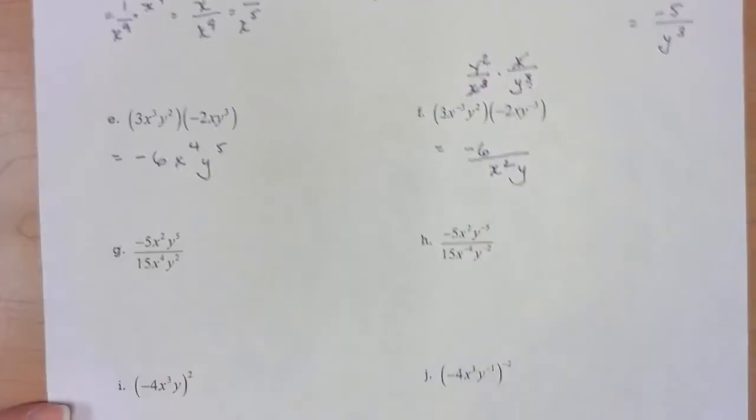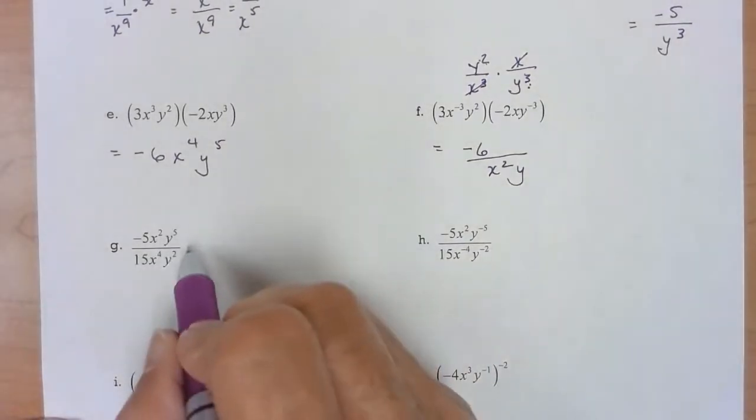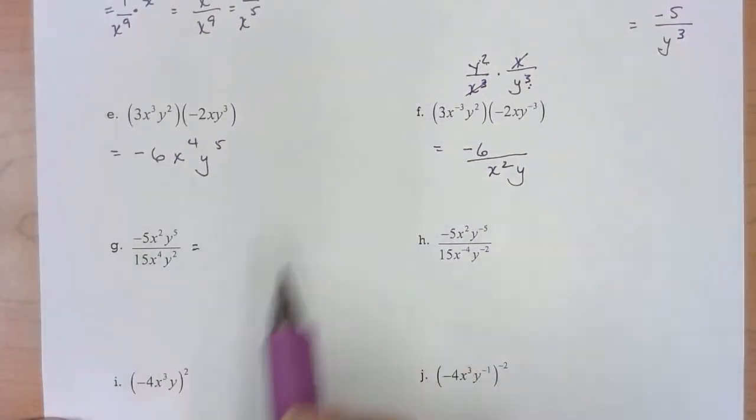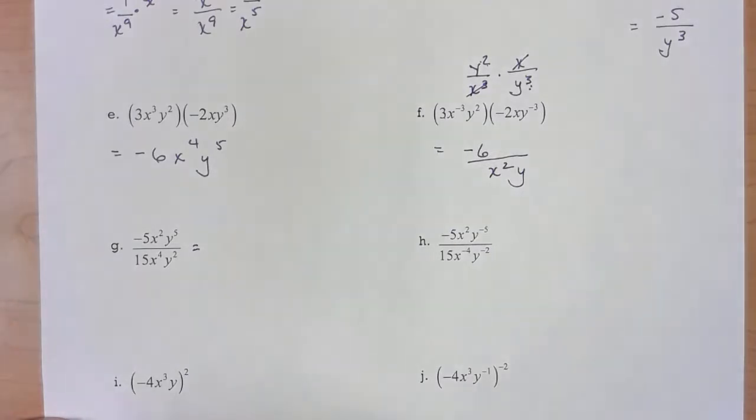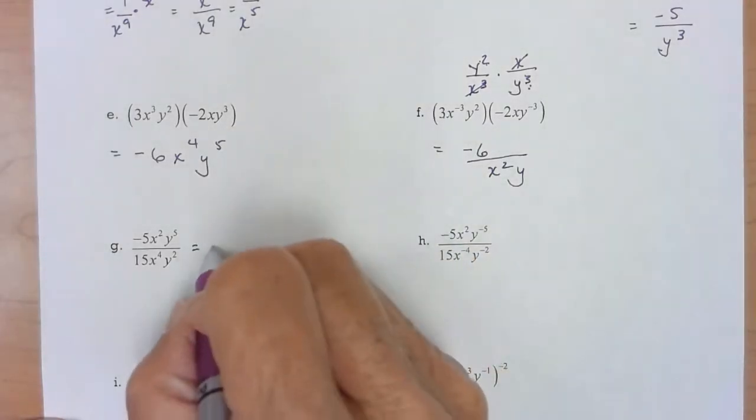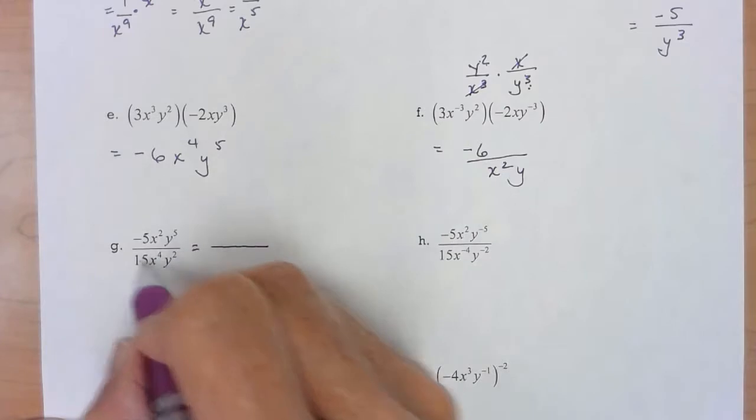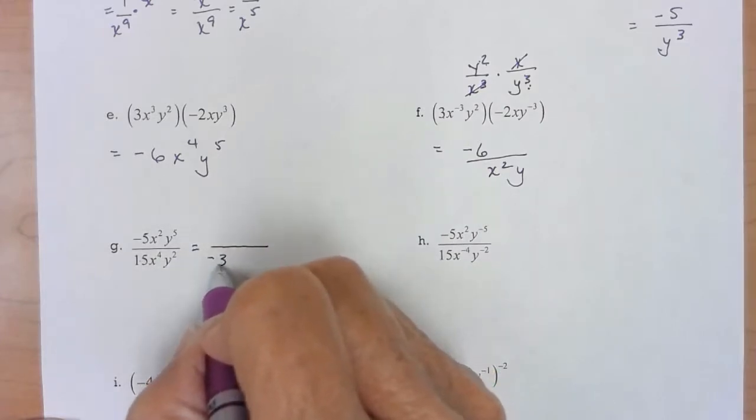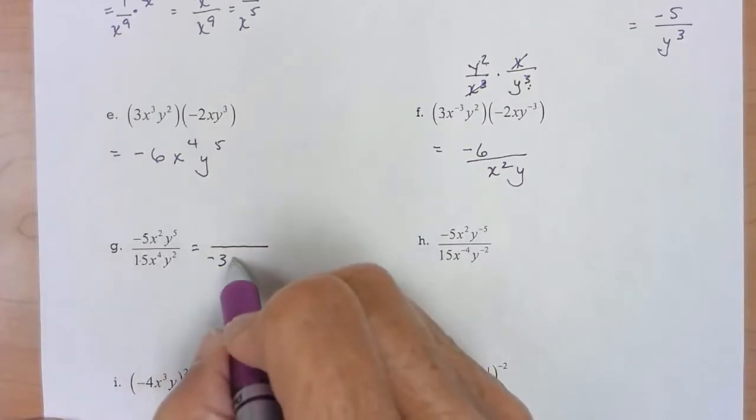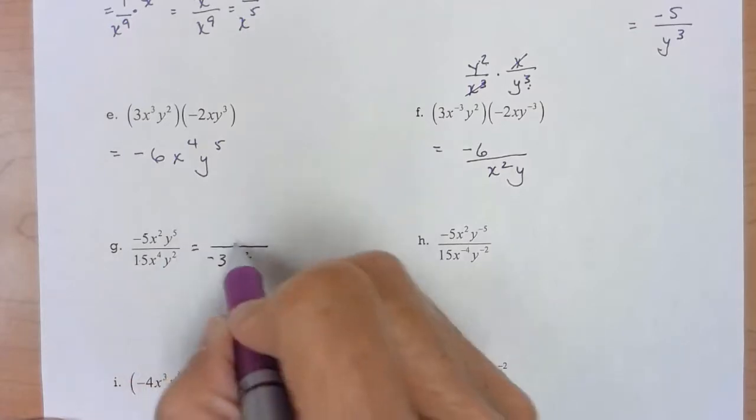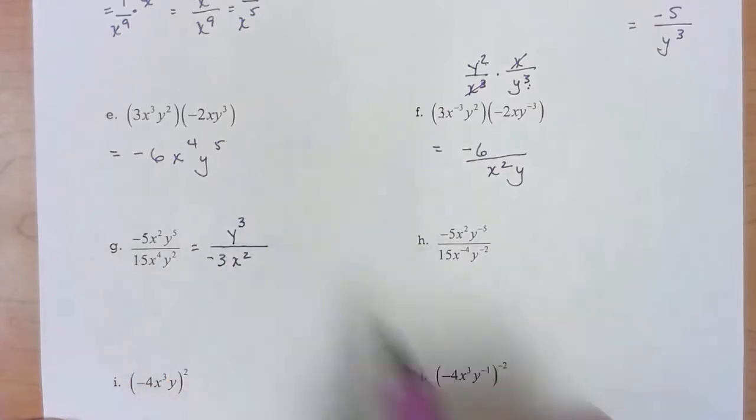Okay next one. All positive exponents. I was just going under the assumption they were all positive, I didn't really look. Coefficient, so I'm going to have a negative three. My x's I'm going to have two in the bottom and my y's I'll have three on top.